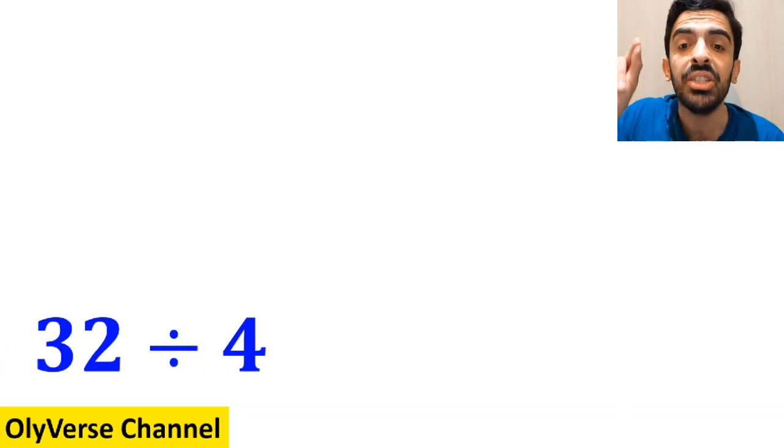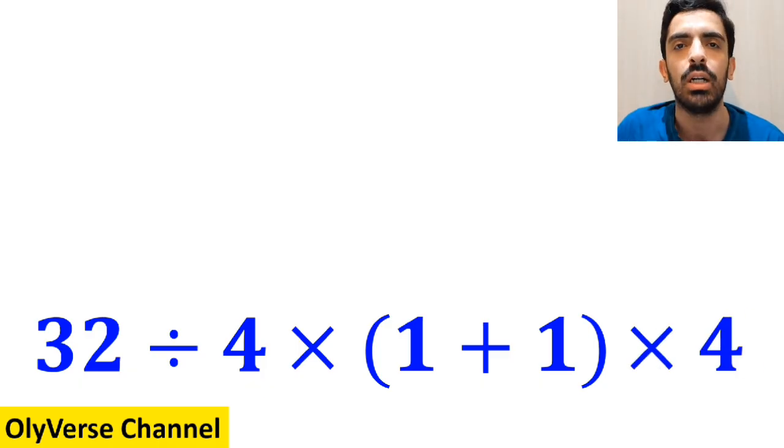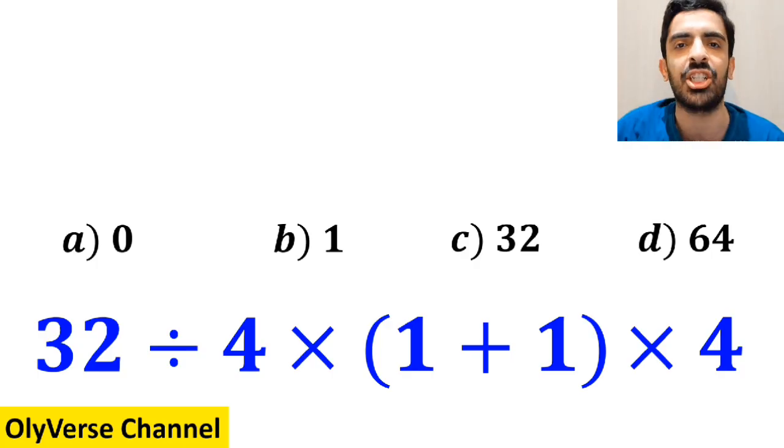What is the value of the expression 32 divided by 4 multiplied by open parenthesis 1 plus 1 close parenthesis and again multiplied by 4? Which option do you think is the correct answer to this question?